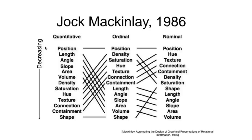The things at the top of the ranking are the most powerful and most effective, decreasing in effectiveness going down. Position is king — it's at the top of all of these. For quantitative attributes, the next most powerful channels are length, angle, slope, area, volume, and density. For ordinal attributes, after position we have density, saturation of color, hue, texture, and so on. For categorical, hue is the second most powerful after position, then texture, connection, containment, density, saturation, and shape.